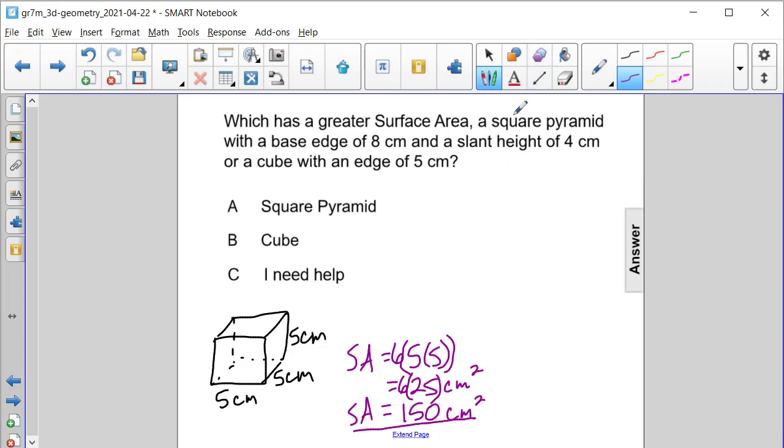And now let's think about the square pyramid. So we have a square pyramid that has edges that are 8 centimeters and a slant height right here that's 4 centimeters.